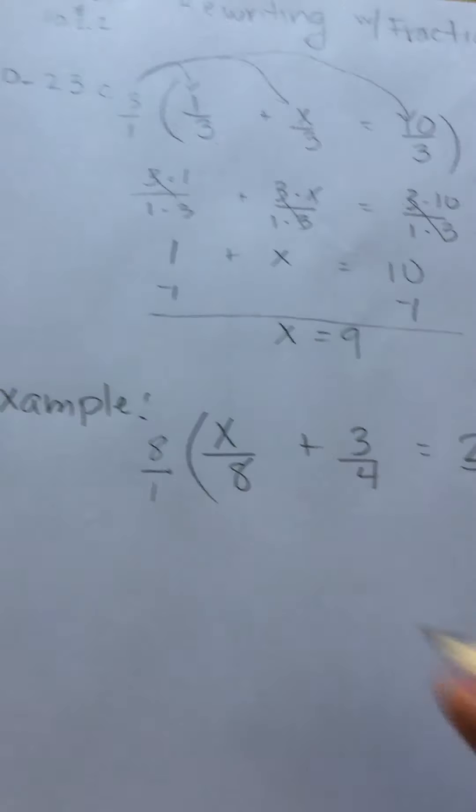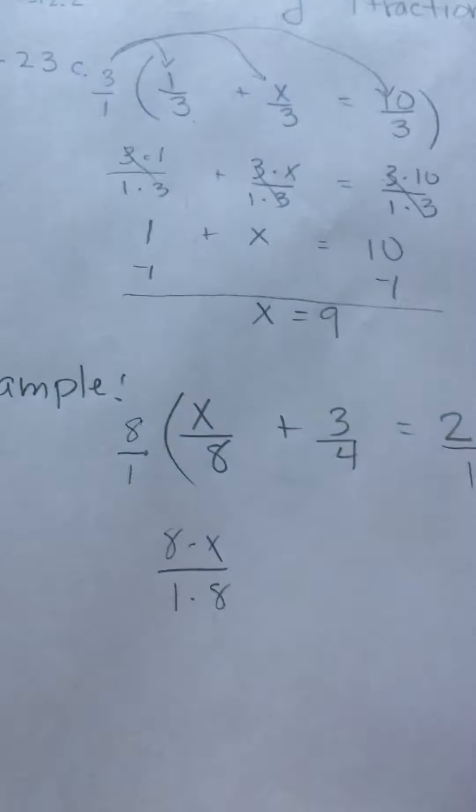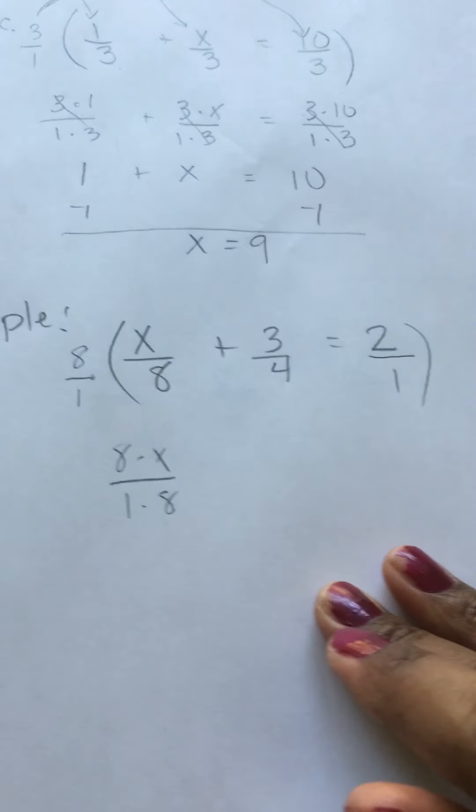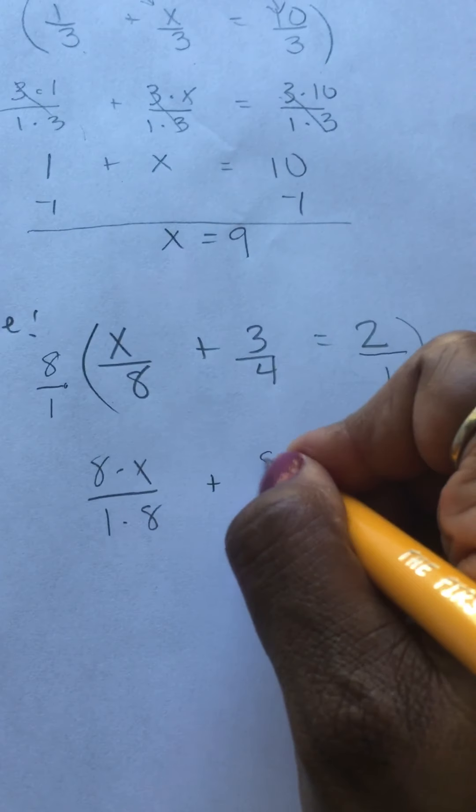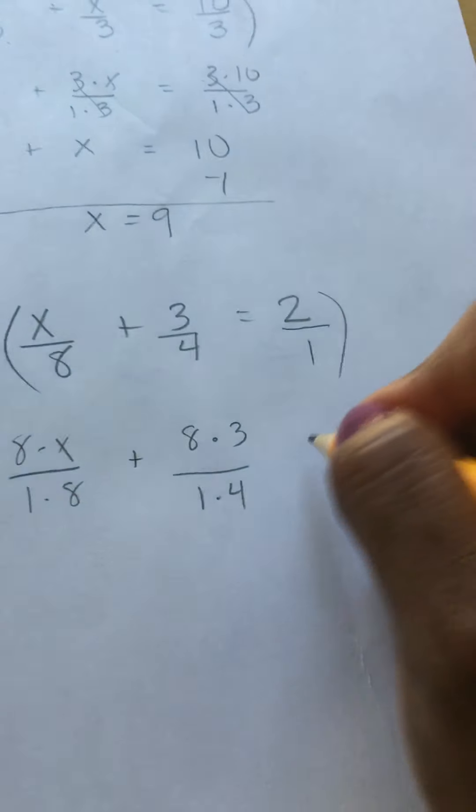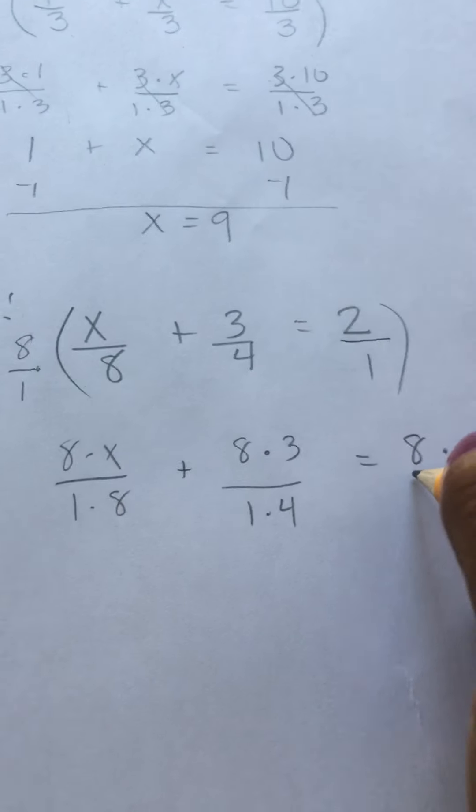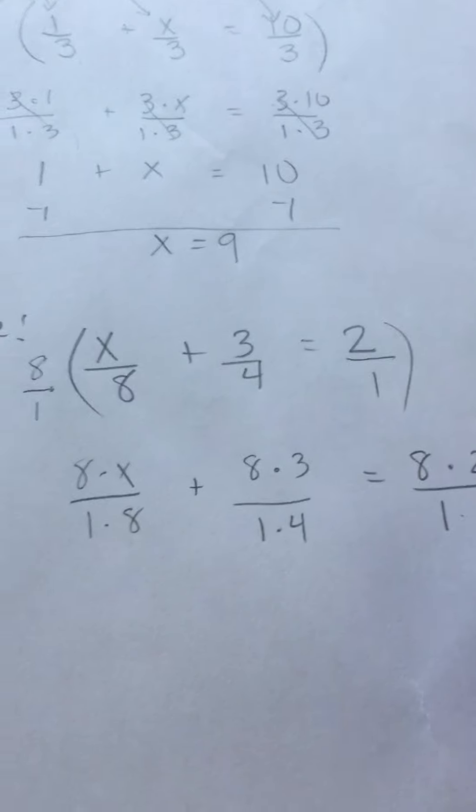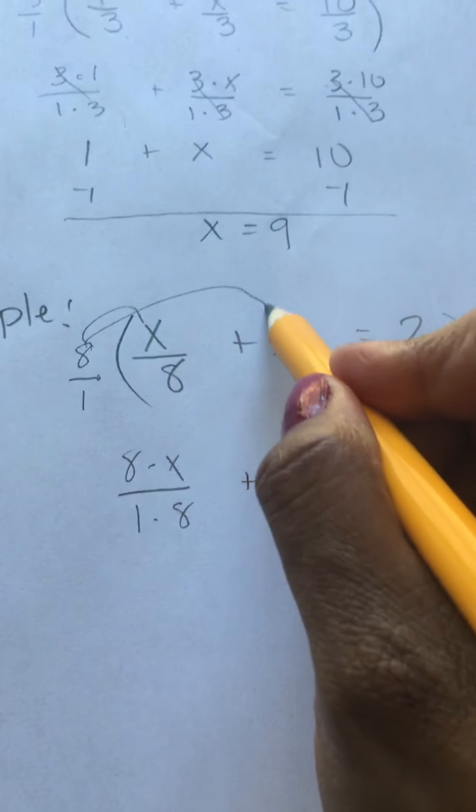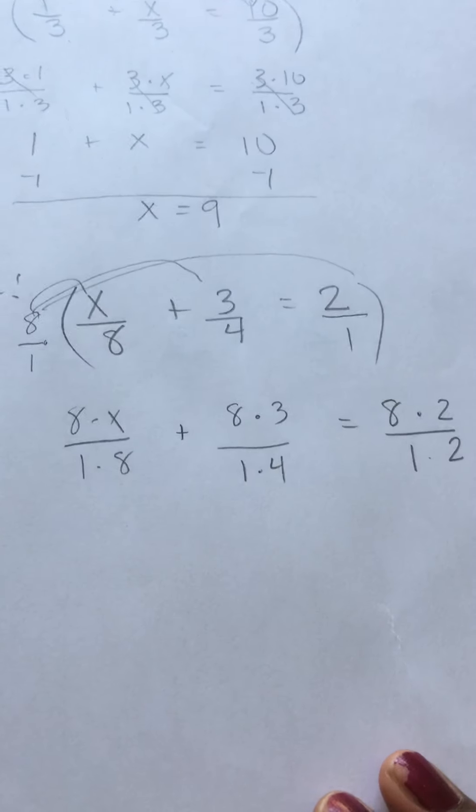So I'll multiply by 8 over 1. So we have 8 times x over 1 times 8 equals, I mean plus, 8 times 3 over 1 times 4 equals 8 times 2 over 1 times 2. And just like before, we multiply everything by that number. I hope you like Baby Shark. My kids love it.